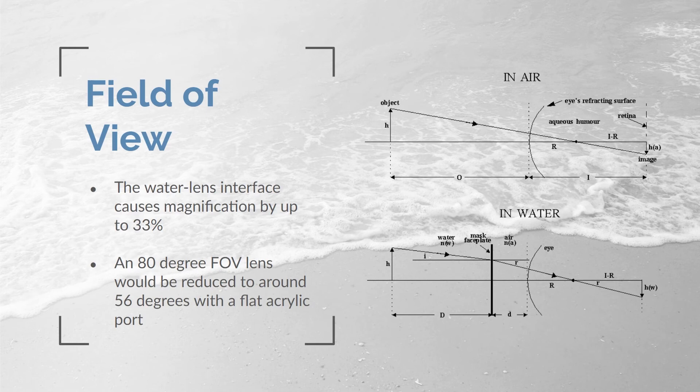Related to distortion is the field of view of the camera. Water itself must be taken into account as part of the lens system. Water has a refractive index of 1.33, and sea water is similar but has variability with depth, salinity, and other dissolved elements. The water-lens interface causes magnification of up to 33 percent, which reduces the field of view. A water-corrected lens returns the geometry to an in-air equivalent. For example, an 80-degree field of view lens would be reduced to less than 60 degrees with a simple flat acrylic port.